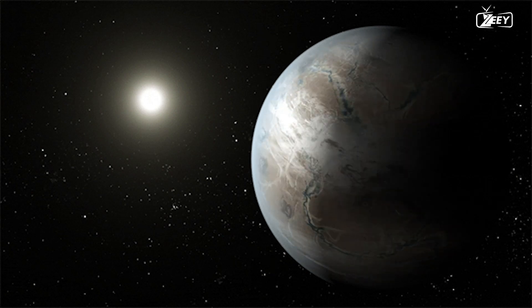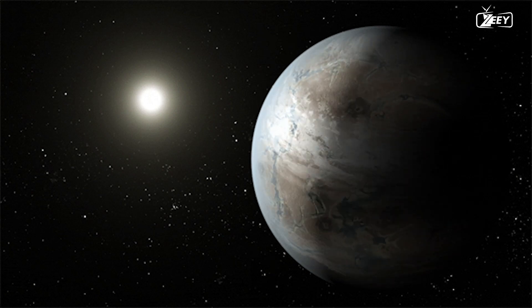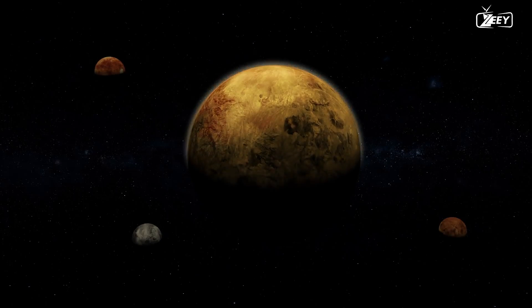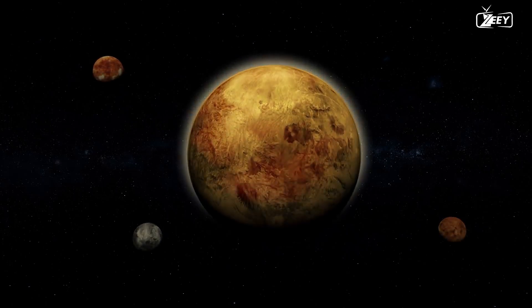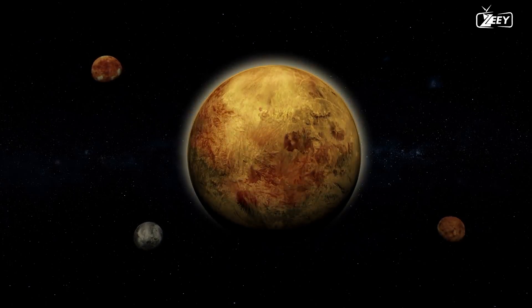For instance, other small planets with orbits more akin to those of Venus and Mars that orbit stars smaller and cooler than our sun have just been confirmed on the very boundaries of the habitable zone.